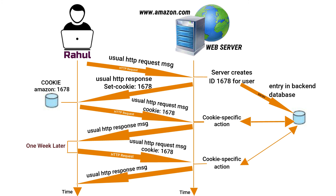If Rahul also registers himself with Amazon by providing his full name, email address, postal address, and credit card information, Amazon can then include this information in its database, thereby associating Rahul's name with his identification number 1678.